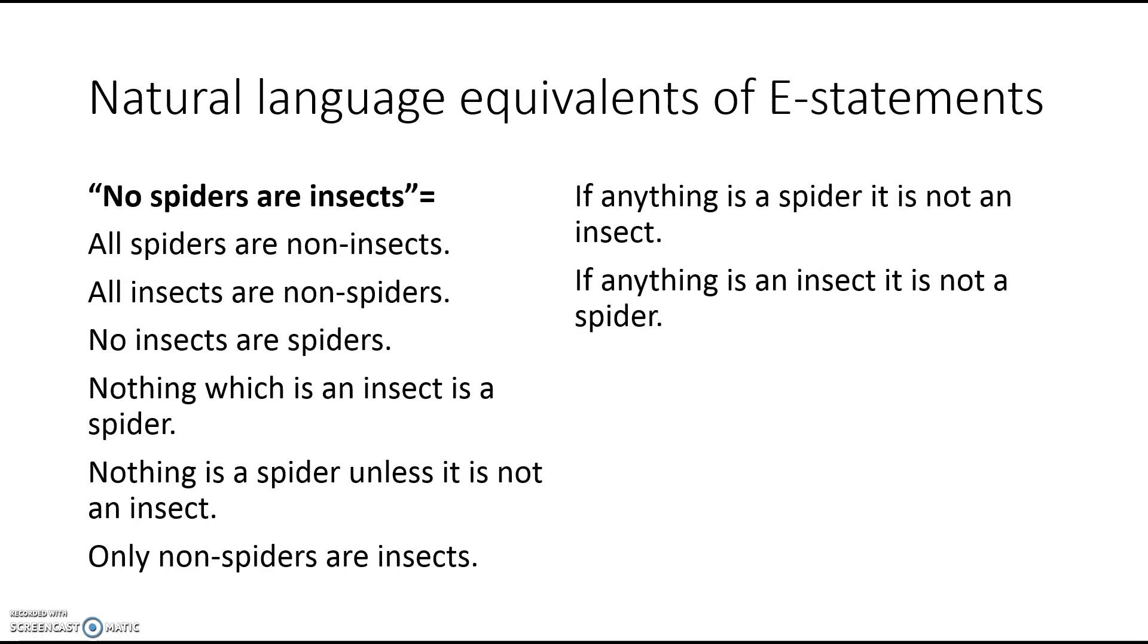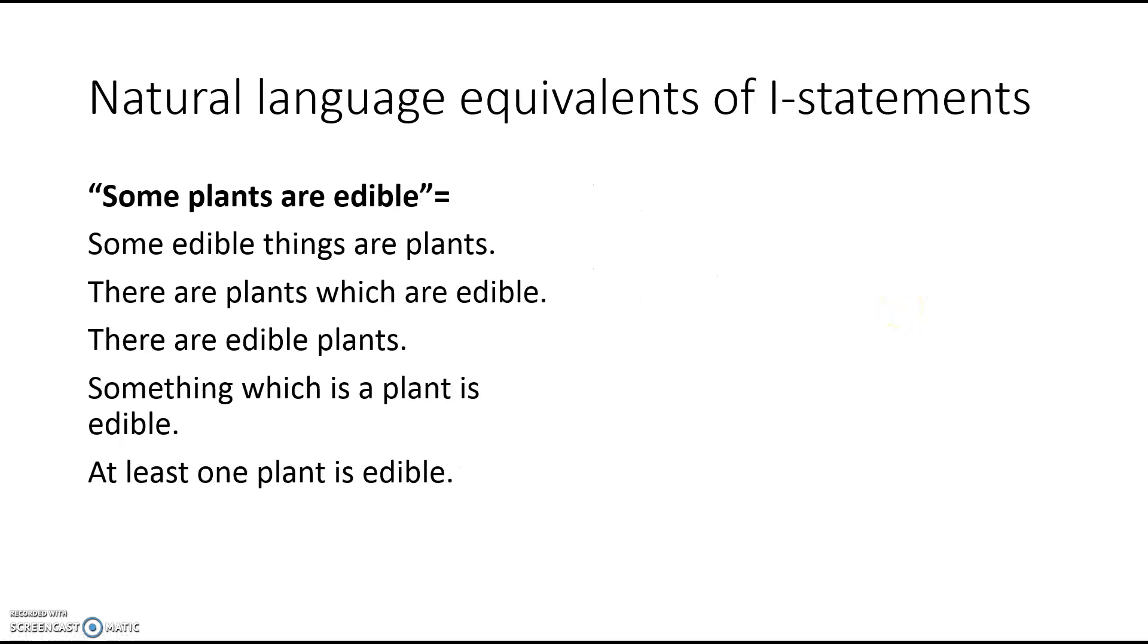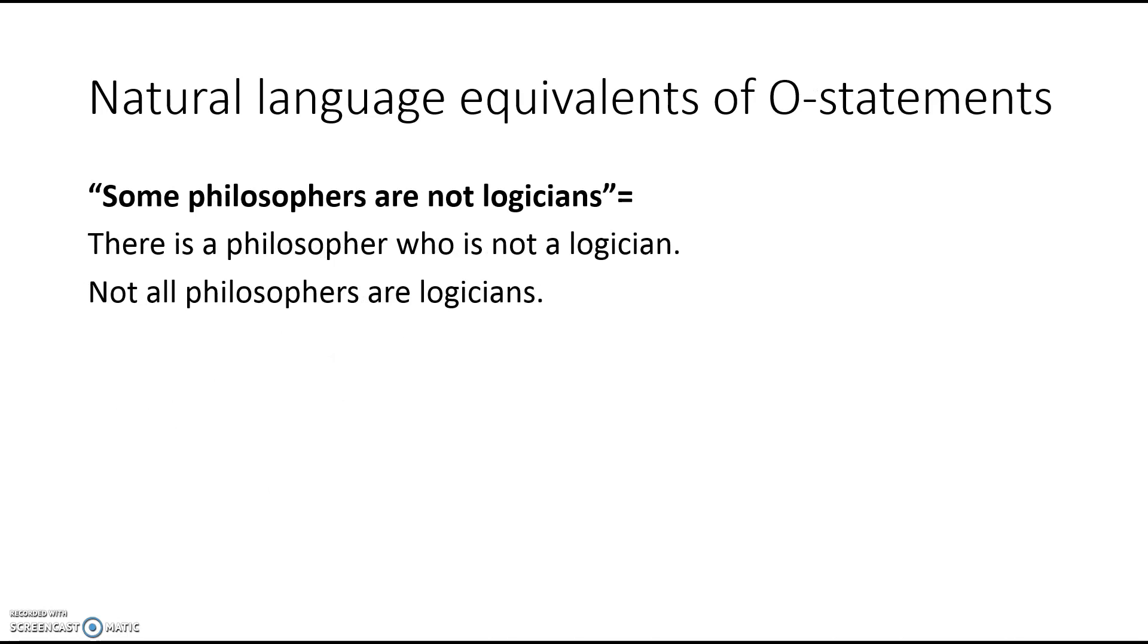The same is true of E statements. So if I say no spiders are insects, that's equivalent to saying no insects are spiders, or to saying that if anything is an insect, it's not a spider. There's a lot of different ways you can make this. The same with I statements and the same with O statements. Give these a look over.